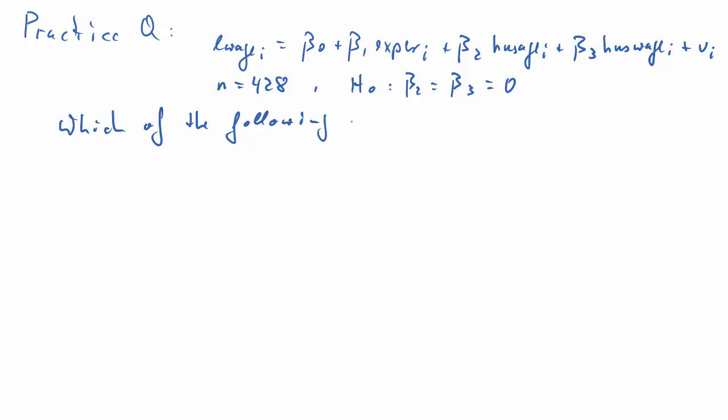And the question you ought to answer now is which of the following are the correct values for Q, the number of restrictions, for instance, are there 3? And the degrees of freedom for the unrestricted model, for instance, are there 423?